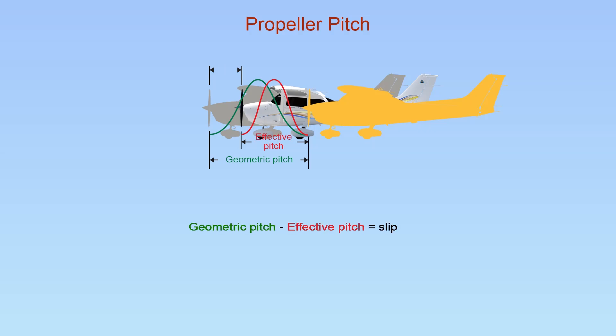Propeller slip is the difference between the geometric pitch of the propeller and its effective pitch. Geometric pitch is the distance a propeller should advance in one revolution with no slippage. Effective pitch is the distance it actually advances.